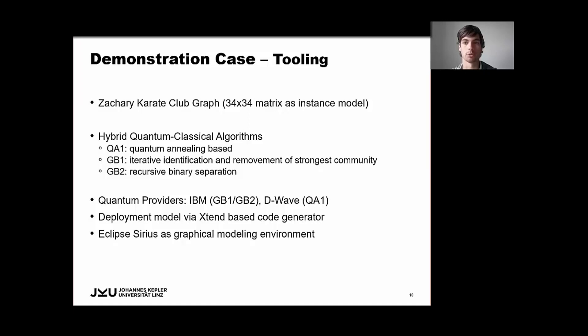And on the solution side, we've utilized three algorithms for this demo case. The first one is based on quantum annealing, and the second and the third algorithm utilize gate-based quantum technology. So the GB1 just iteratively finds the strongest community within a graph and removes this community and stores it. And this procedure is just repeated until there is no more community left. And the GB2 is just a recursive bipartition of the original graph.